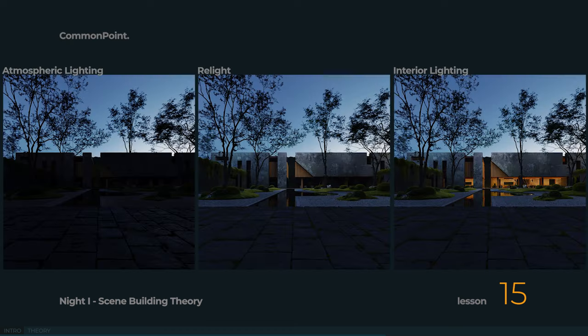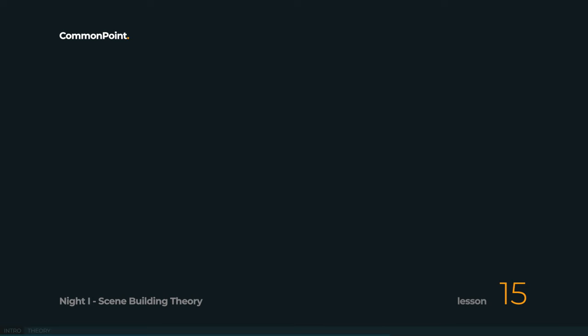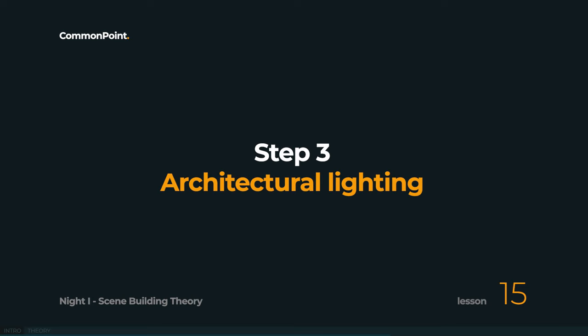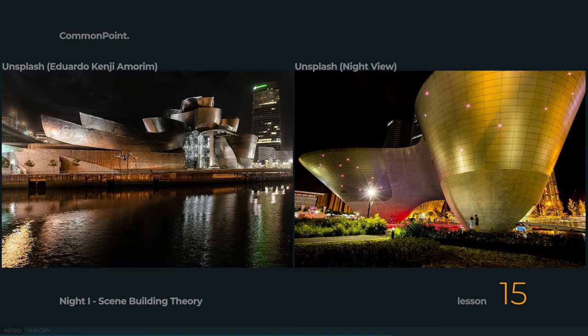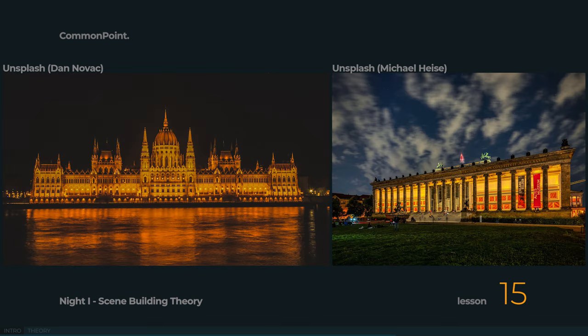So we have two steps behind us. At this point, we have built the atmospheric lighting, which is our base, and we have set up the interior light. We still have two steps to go to make the image much more attractive commercially. The next step will be architectural lighting — by that, we mean all artificial lights that will illuminate our building from the outside. And to execute this step the best, we'll need to understand the basic rules that govern architecture: how it's built, where the distinct materials are, what was the architect's intention, what should be emphasized with light, and what should be left in shadow.